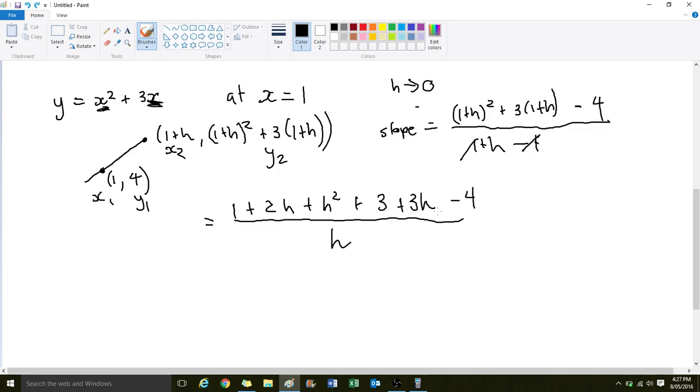So let's simplify this a little bit. We have 1 plus 3 is 4, and 4 take 4, can cancel. So, what we have then is 2h plus 3h is going to be 5h plus h squared, divided by h. Again, our common factor is h for both the numerator and the denominator.